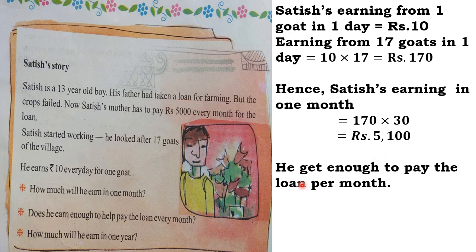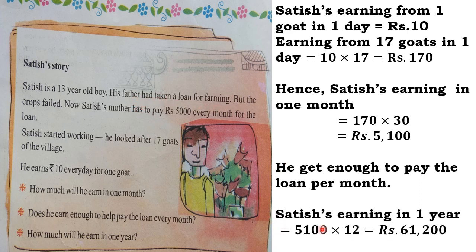He can be able to pay the loan because his father and mother are also working somewhere else. He is earning in 1 year: Rs. 5,100 × 12 = Rs. 61,200. Children, I have not shown you the multiplication calculation here — you have to do it by yourself by multiplying 5,100 × 12, and whatever answer comes, you have to verify it. Don't write the answer directly.